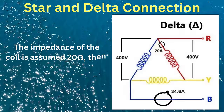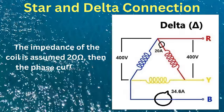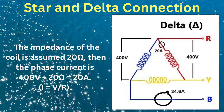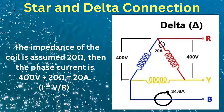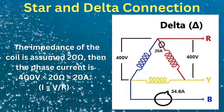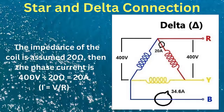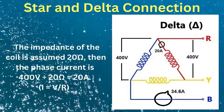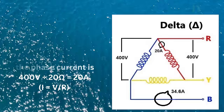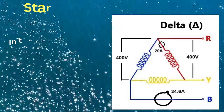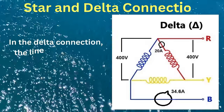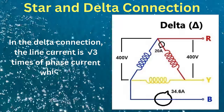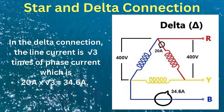The coil's impedance is assumed to be 20 ohms, so the phase current is I equals V divided by R — that is 400 volts divided by 20 ohms, which equals 20 amps. In the delta connection, the line current is root three times the phase current, which is 20 times root three, equals 34.6 amps.